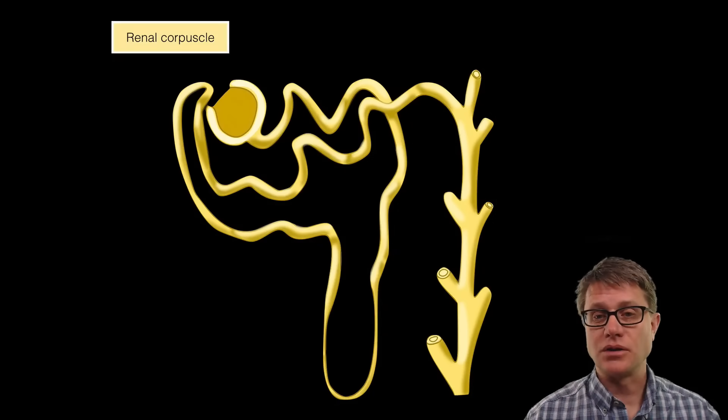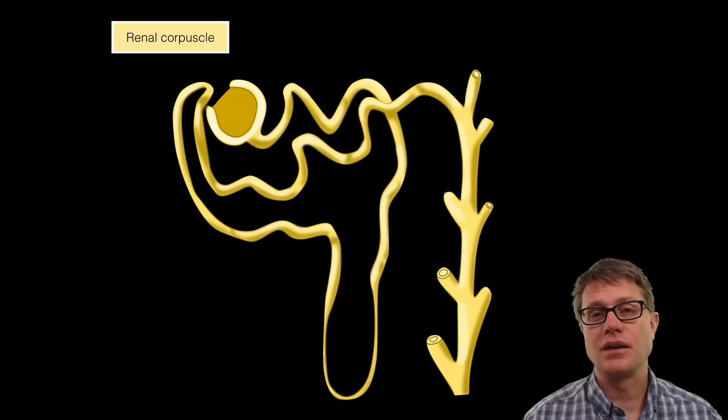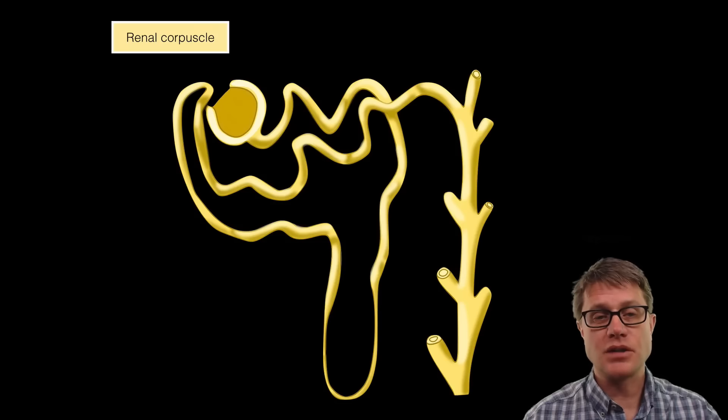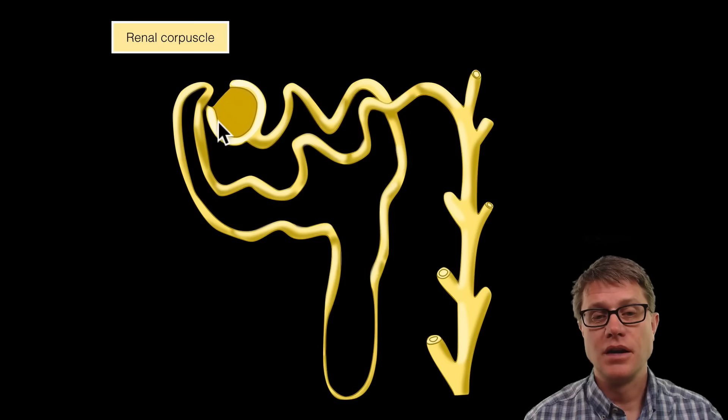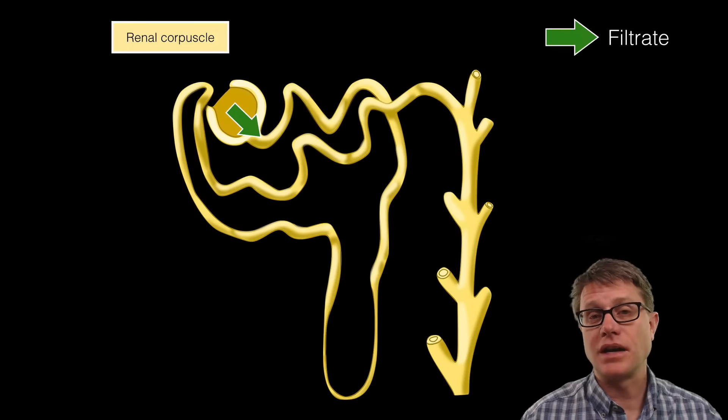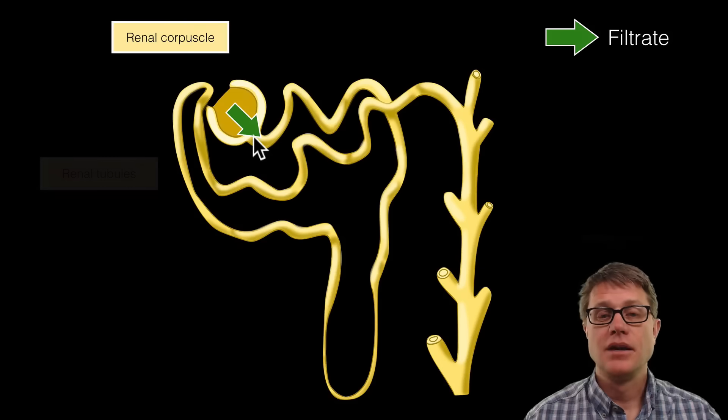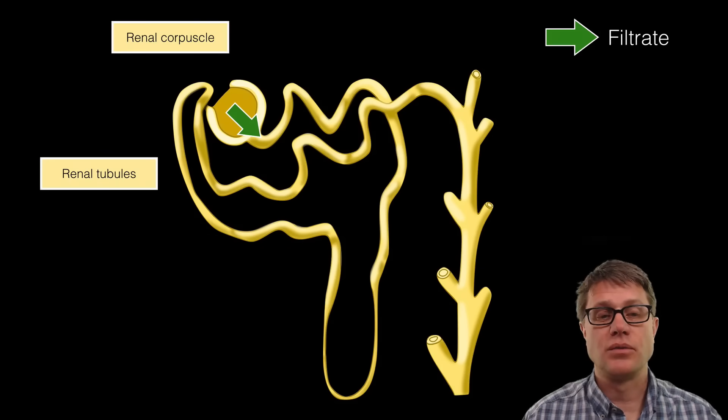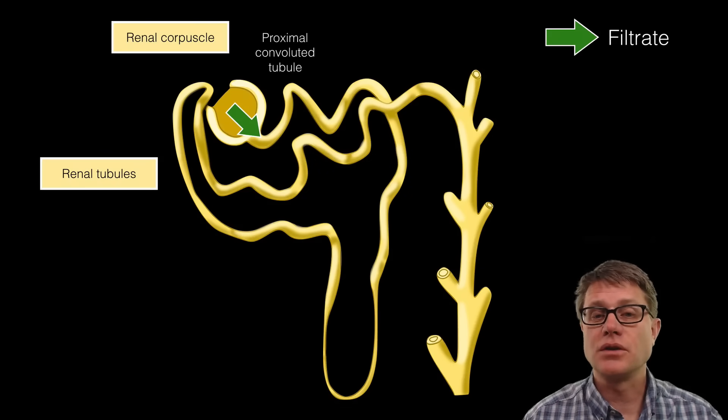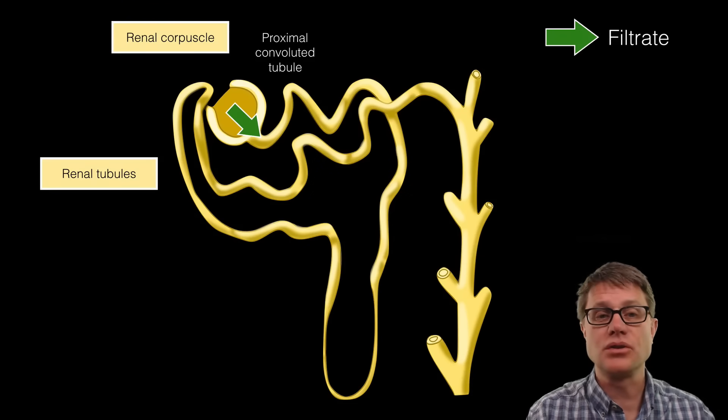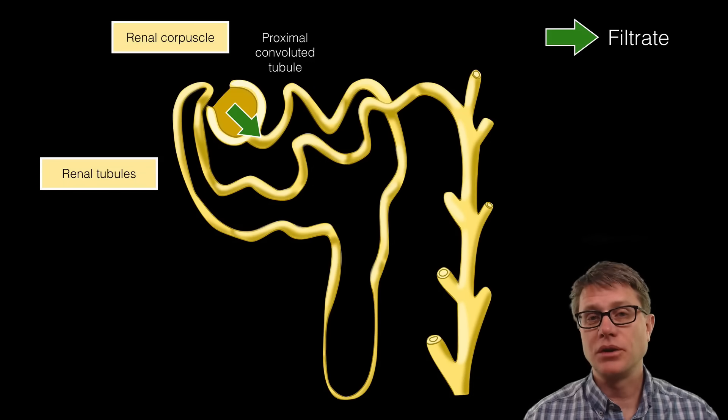If we remove the circulatory system, now we can see what that nephron looks like. The first part is the renal corpuscle, where filtration occurs. At this point we call this a filtrate. From there it goes into a number of different renal tubules. The first one is the proximal convoluted tubule. Proximal means close to the renal corpuscle, and convoluted means it's folded over and over in many dimensions, increasing the surface area.